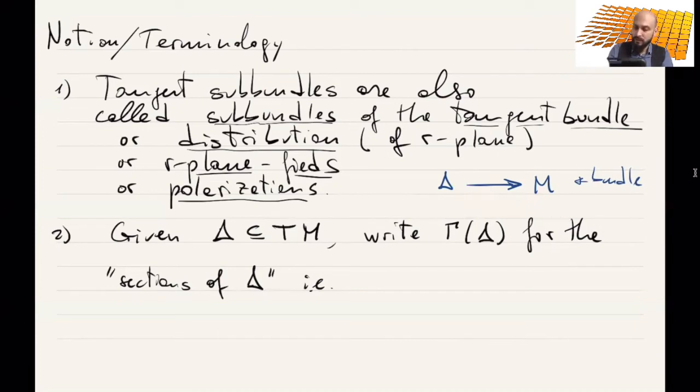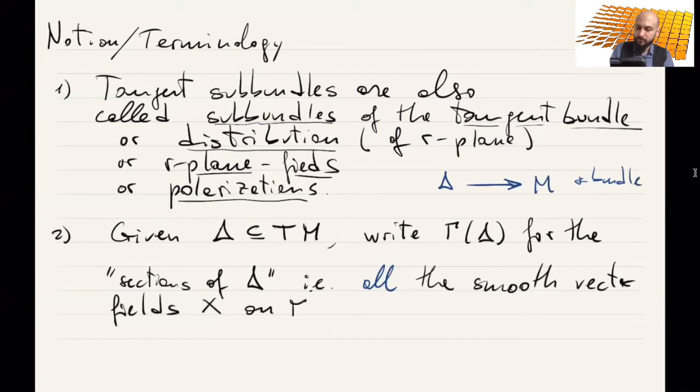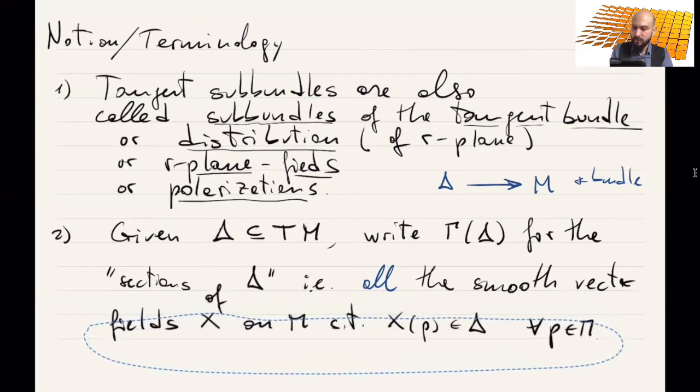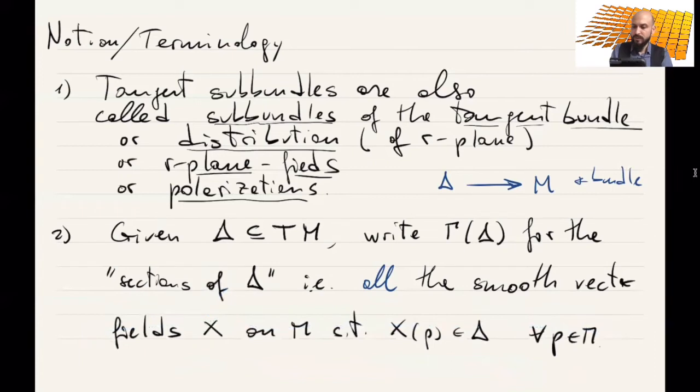What it means: the collection of smooth vector fields x on M, such that the vector field at each point belongs to delta. This is for all p in M. So this is the definition of the sections of delta.